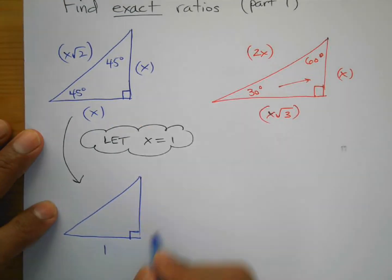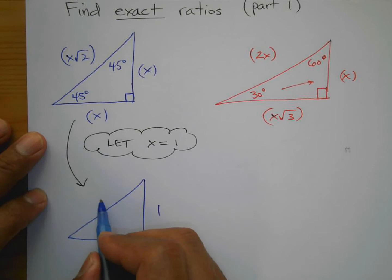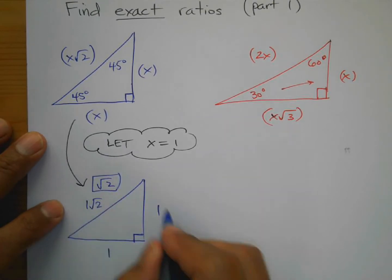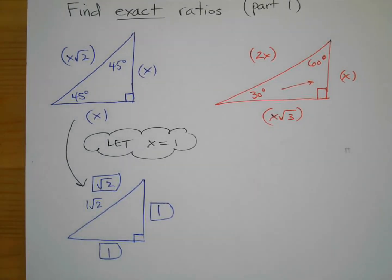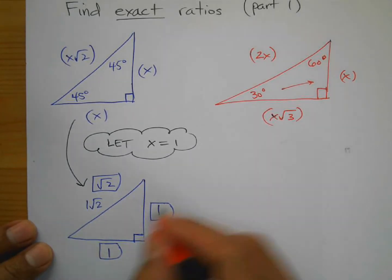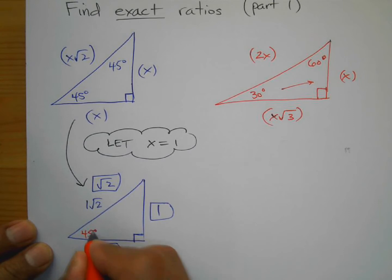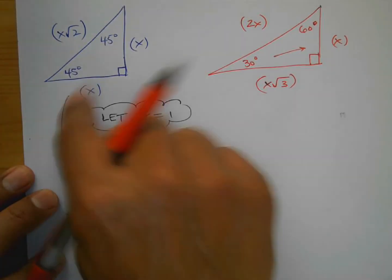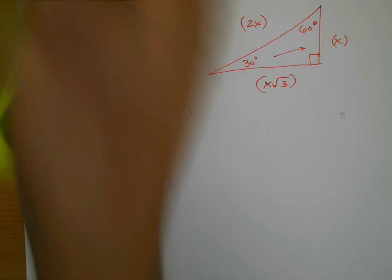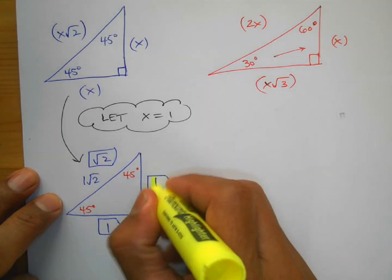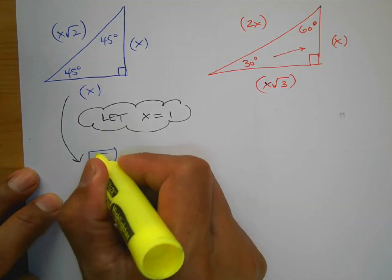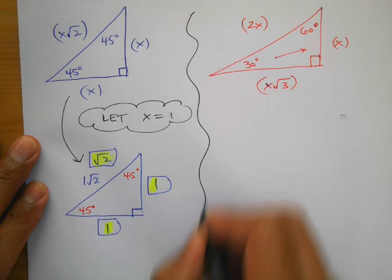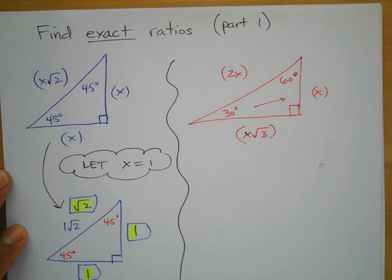For the 45-45-90 triangle with x = 1: both legs are 1, and the hypotenuse is 1·√2, which is just √2. So the three sides are 1, 1, and √2. That's how you label the sides — you use the value of 1 for x.